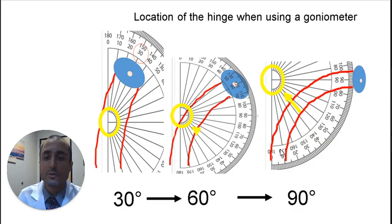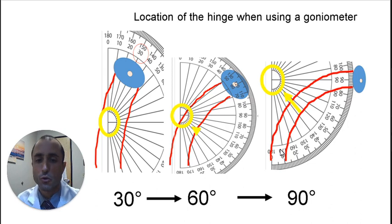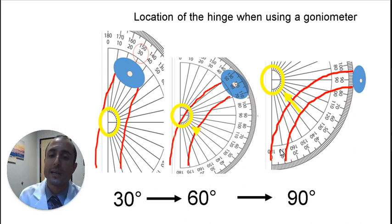If you want to use a goniometer to measure an arc type of curvature, the hinge of the goniometer will need to be positioned further away from the dorsum of the curvature as the curvature increases as shown here.